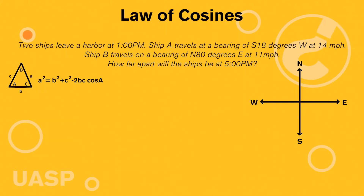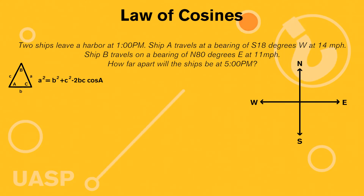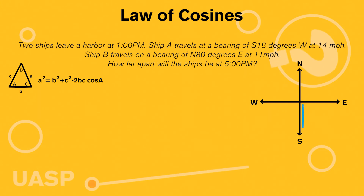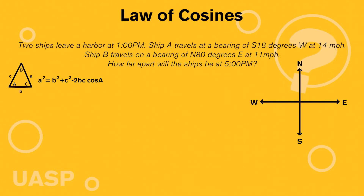Now let's go ahead and read this problem. Two ships leave a harbor at 1 p.m. Ship A travels at a bearing of south 18 degrees west at 14 miles per hour, and ship B travels on a bearing of north 80 degrees east at 11 miles per hour. How far will the ships be apart at 5 p.m.? For ship A, bearing of south 18 degrees west — essentially they're going southwest. Think of south as traveling down the south axis.